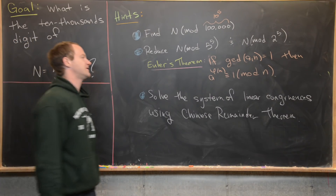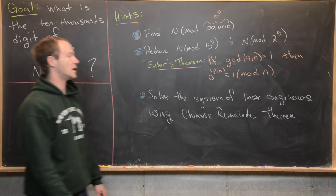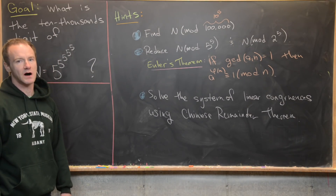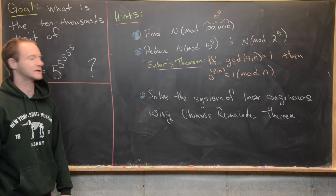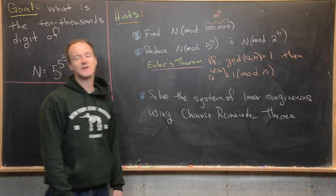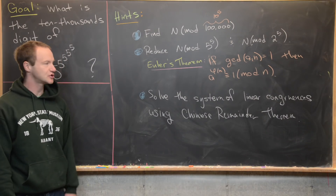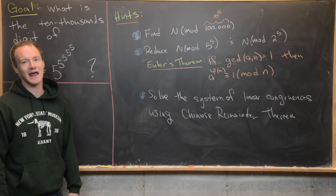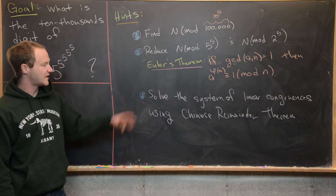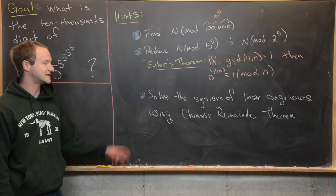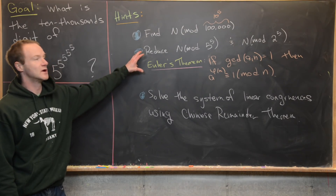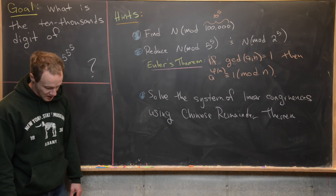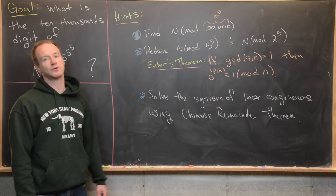Euler's theorem says: if the GCD of A and N is one, then A to the phi of N is congruent to one mod N. This is a generalization of Fermat's little theorem. Phi of N is Euler's totient function — it counts the number of integers that are relatively prime to N and less than or equal to N. We'll finish this off by solving a system of linear congruences using the Chinese remainder theorem.